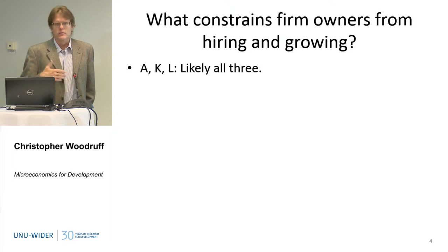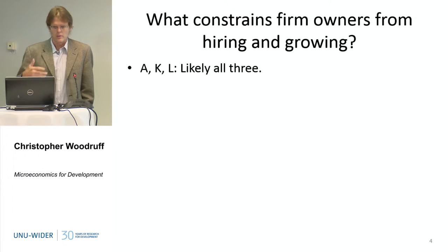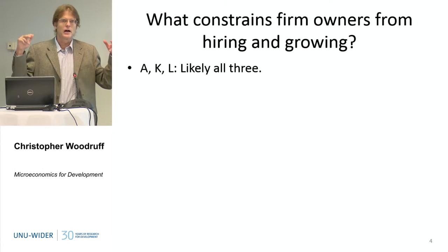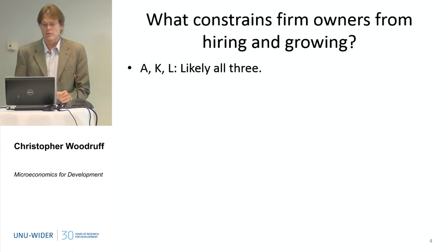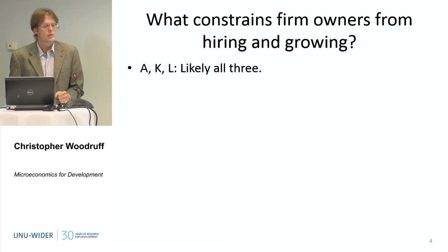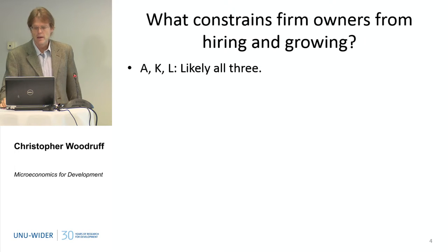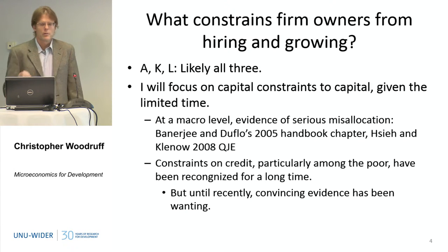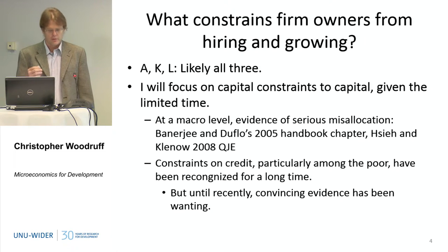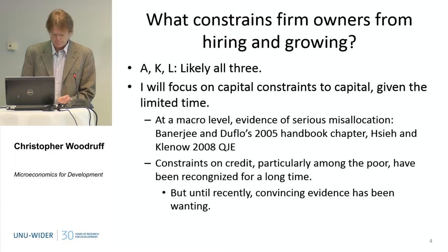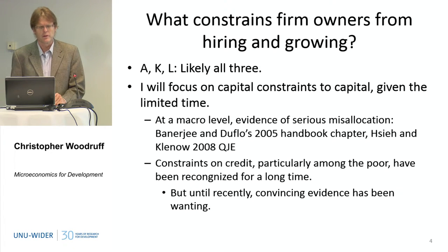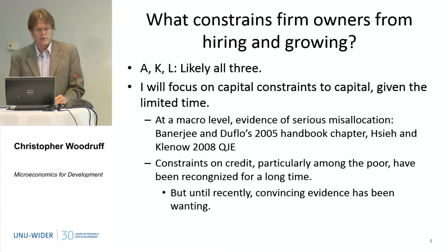We can think about a standard AKL production function. Firms take capital and labor and combine it with technology, ability, and other ways they become more productive. We ask: what are the constraints to growth? It's likely all three — labor, capital, and skills or technology. I'm going to focus first on capital constraints, and I'll also say something about the A part — the technology or ability part of the production function.